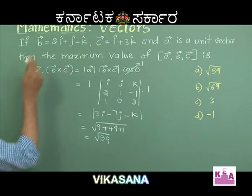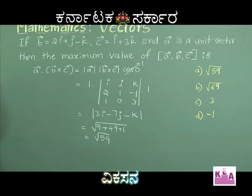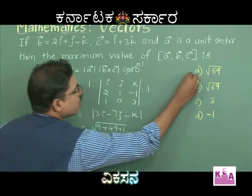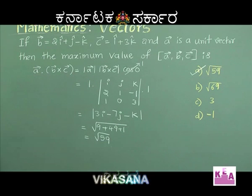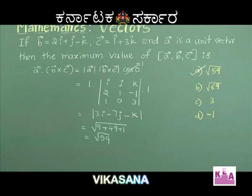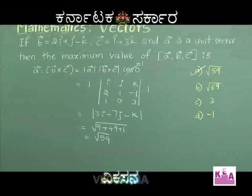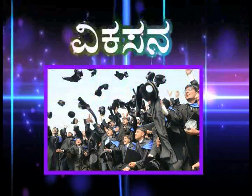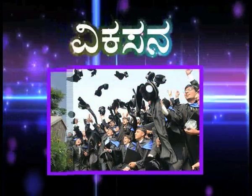Therefore, the maximum value of the scalar triple product is √59. That is, option A is correct.